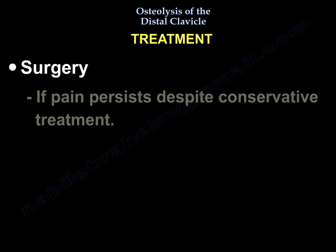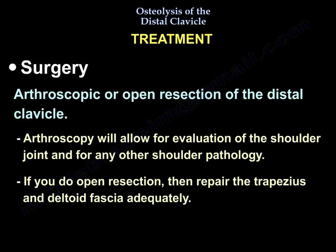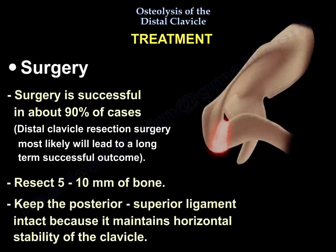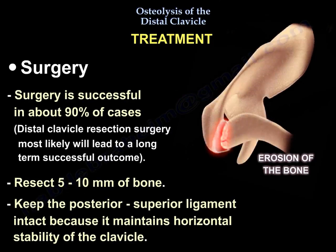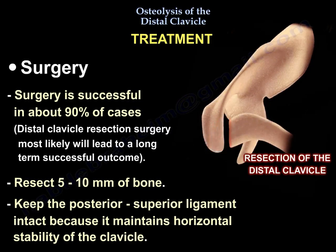Surgery can be done if pain persists despite conservative treatment. The surgery will be arthroscopic or open resection of the distal clavicle. Arthroscopy allows evaluation of the shoulder joint for any other pathology. If you do open resection, repair the trapezius and deltoid fascia adequately. Surgery is successful in about 90% of cases and involves resecting 5–10 mm of bone. Keep the posterior superior ligament intact because it maintains the horizontal stability of the clavicle.